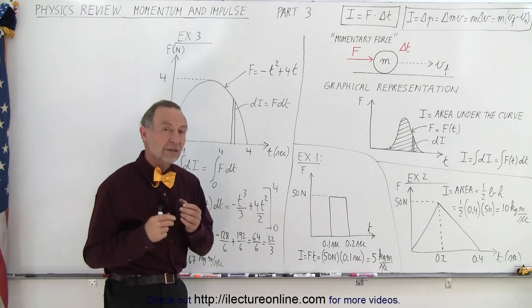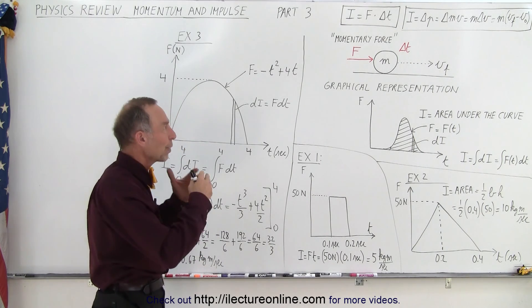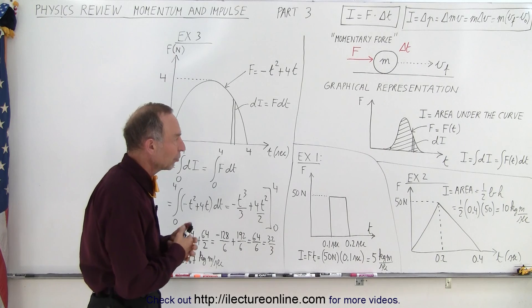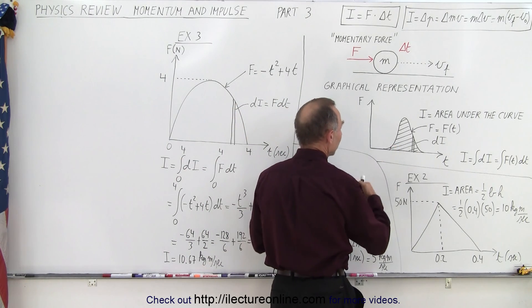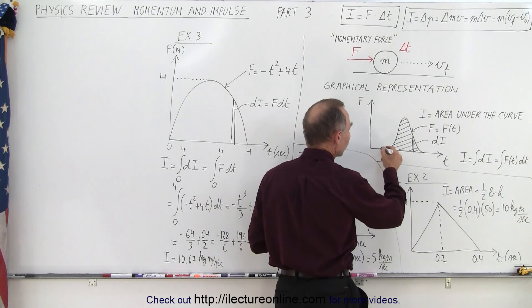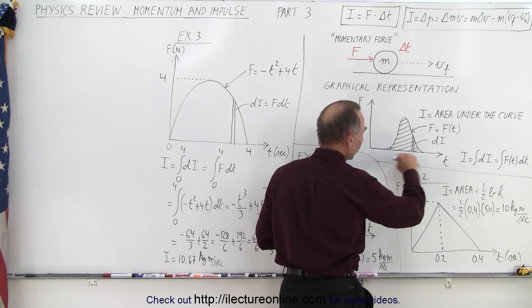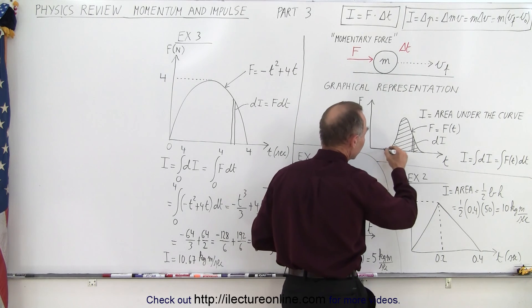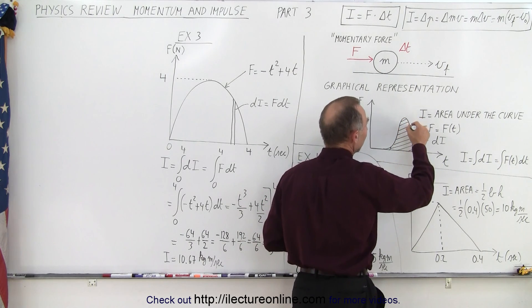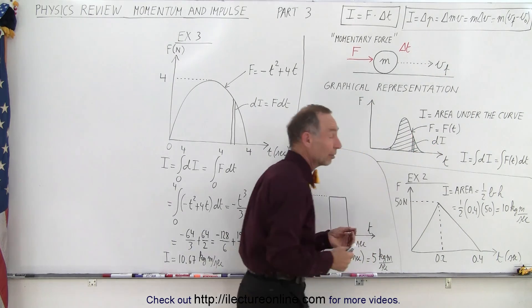Now impulse also makes a lot of sense when we look at it from a graphical representation. And so essentially what you can see here is that an object is being pushed by force over some time. So on the horizontal axis we have time, on the vertical axis we have force, and notice that the force continuously changes, increases to a maximum value, and then begins to wane and goes back to zero.